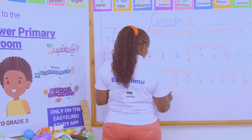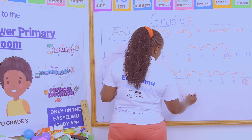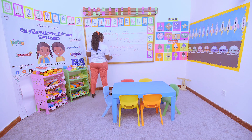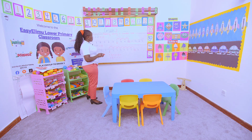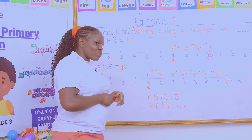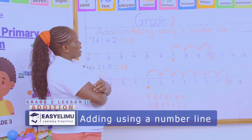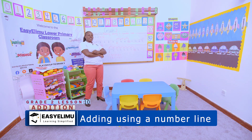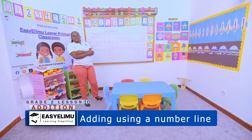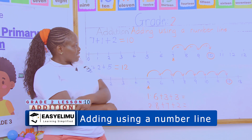During your free time, you have to add these using a number line. The first one is six plus three plus three, and the second one is eight plus seven plus two. Tell me what your answer will be. You must draw a number line — I want to see the number line you used for adding. Make sure you show the number line when asked to add using a number line. Any questions? There is no problem.